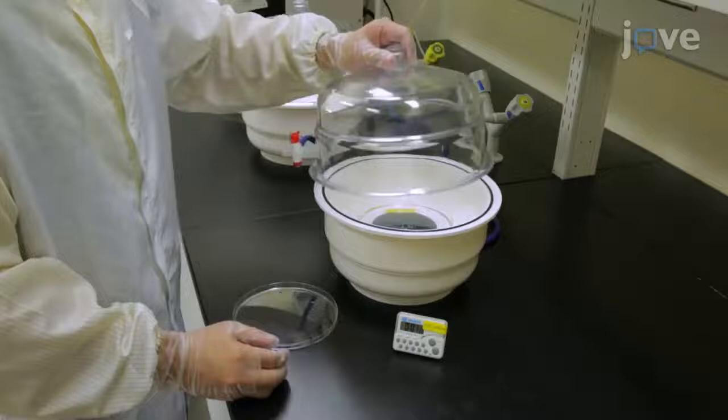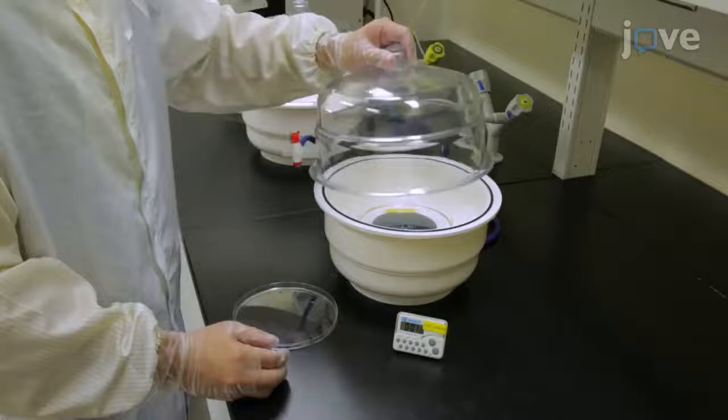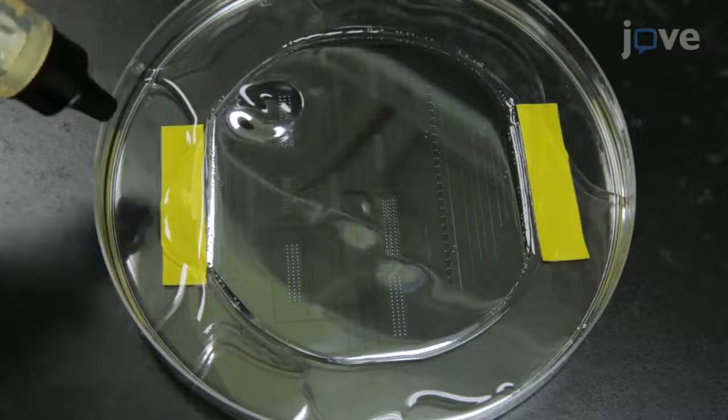Place the 15 cm dish into a desiccator and apply a vacuum for one and a half minutes. Then remove the dish from the desiccator and eliminate residual air bubbles in the PDMS with nitrogen gas.